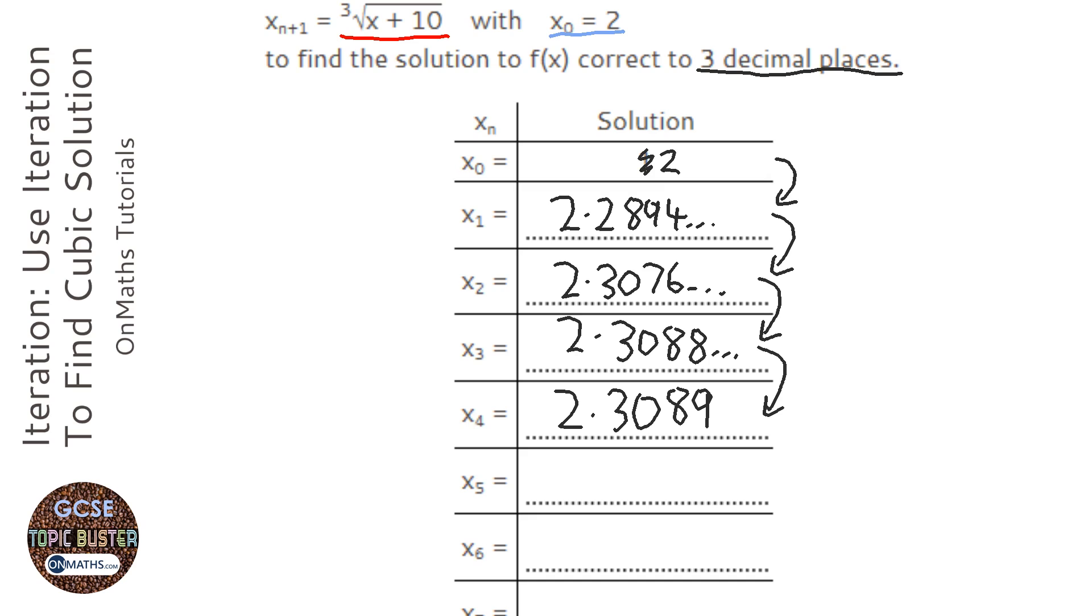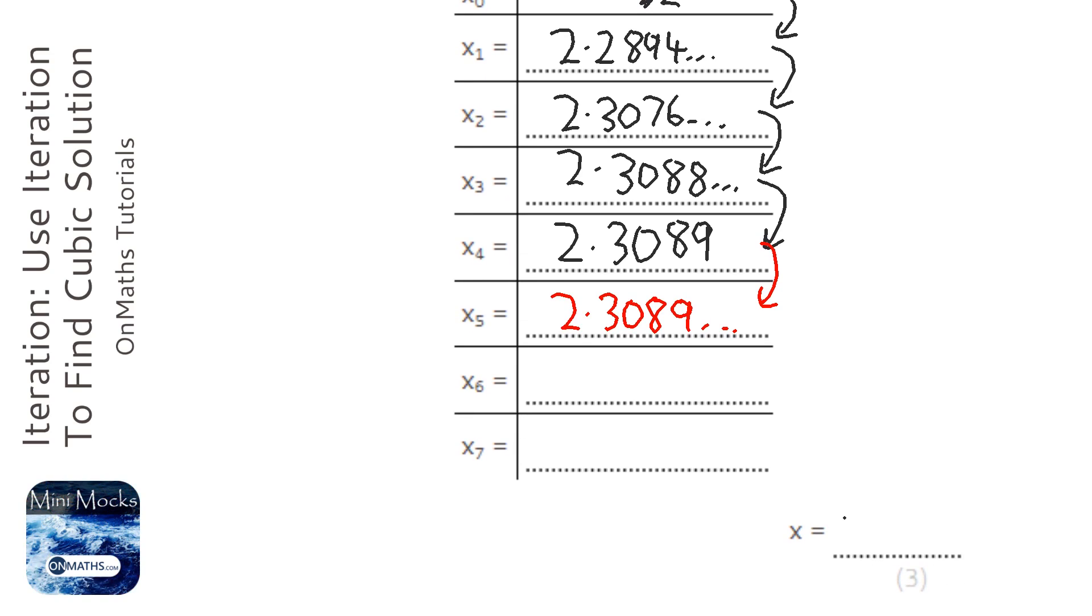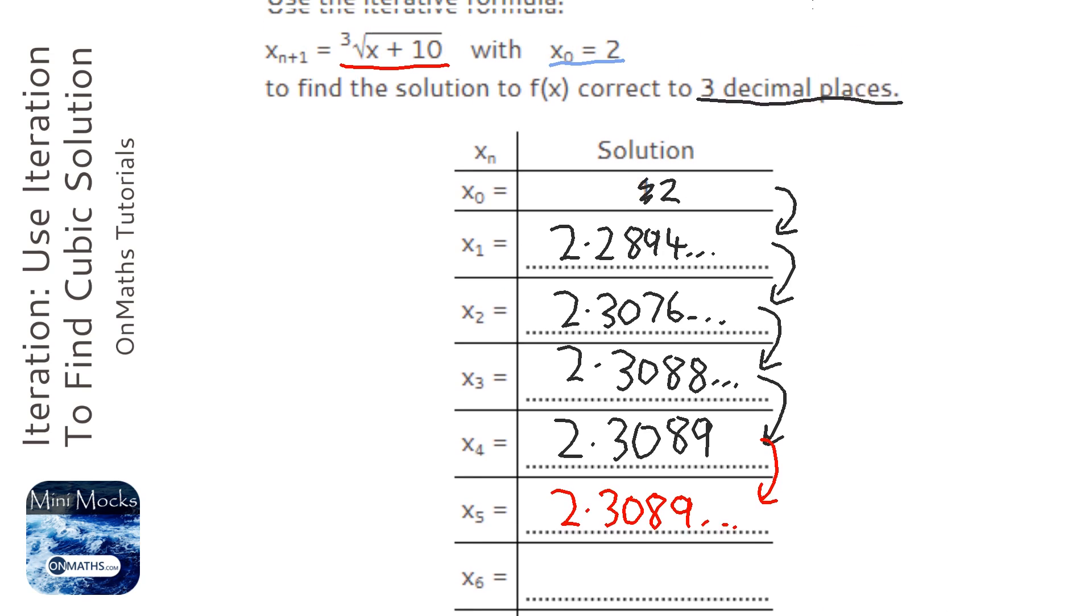As soon as it repeats, you can actually stop. I'm just going to carry on a bit to see what happens. So we've got 2.3089... And again, 2.3089 when I click it again. So my answer would be 2.309 to three decimal places.